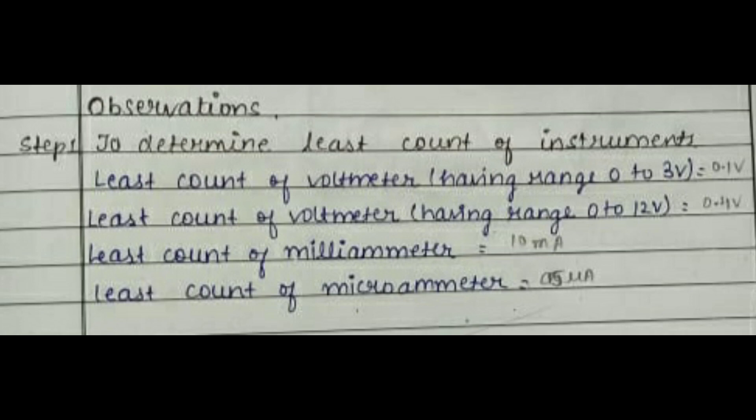This image shows the observations made while performing this practical. The least count of the voltmeter has been obtained for two ranges: 0 to 3 volts and 0 to 12 volts. The least count of the milliammeter and the least count of the microammeter have also been obtained.